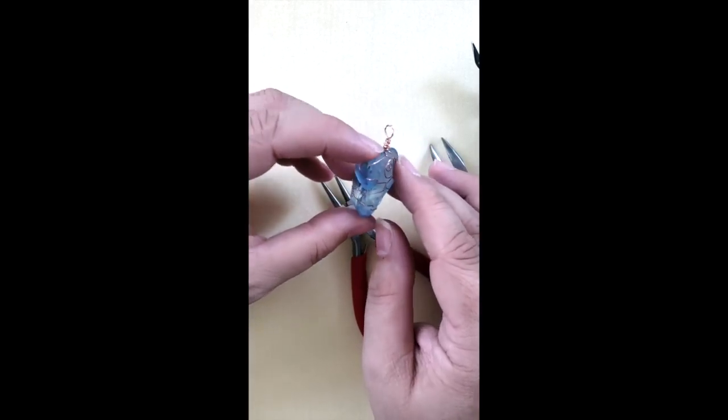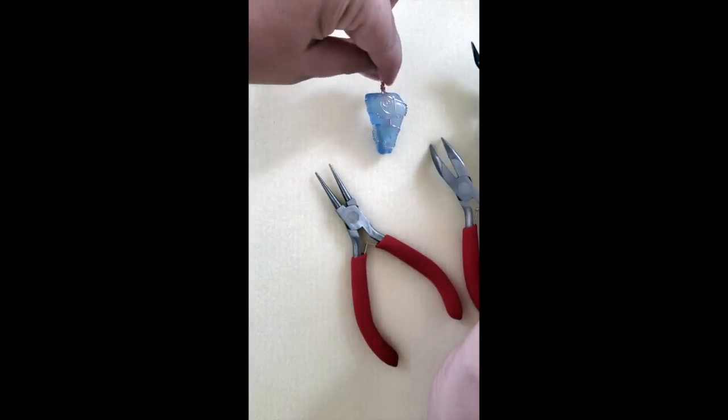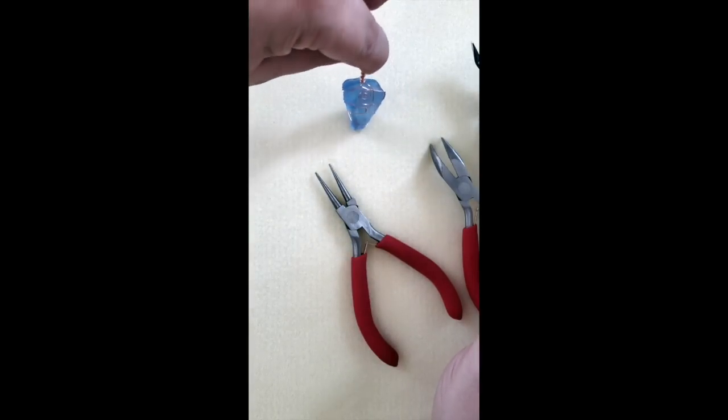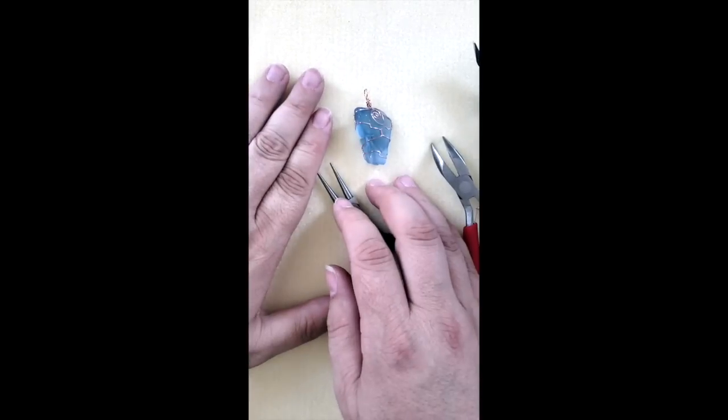Now, once that is all dried from my sweaty hands, that will look like a nice piece of sea glass that's been all wrapped up. Put that on a nice little cord. You've got a great little necklace. All right. Well, thanks again for joining me today. I hope you had fun. I know I did. And look forward to my next video here on Conversations with Wire. Thank you.